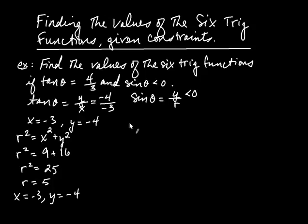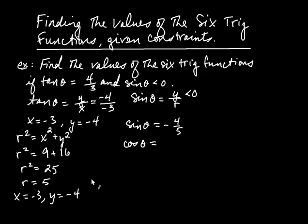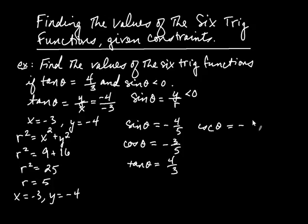Sine of theta is y over r, so it's negative four-fifths. Cosine of the angle is x over r, so it's negative three-fifths. Tangent we are given: four-thirds. Cosecant of the angle is r over y, so it's five over negative four, or negative five-fourths — the reciprocal of sine. Secant is the reciprocal of cosine, so it's negative five-thirds. And cotangent is the reciprocal of tangent, so it's positive three-fourths.